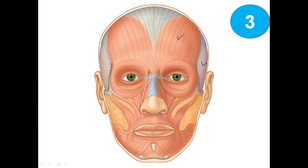This one is the temporalis muscle. Around the eye — orbicularis oculi. Around the mouth — orbicularis oris. On the nose, this one is the nasalis muscle. From the zygomatic bone, this is the zygomaticus major and the minor muscle. And here the mentalis muscle, the depressor labii inferioris muscle, the depressor anguli oris muscle, and the risorius muscle.